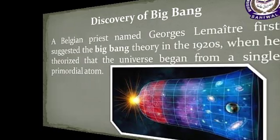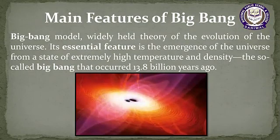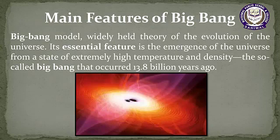The next point is the main features of the Big Bang Theory. The Big Bang Model is the widely held theory of the evolution of the Universe. Its essential feature is the emergence of the Universe from a state of extremely high temperature and density — the so-called Big Bang — that occurred 13.8 billion years ago.